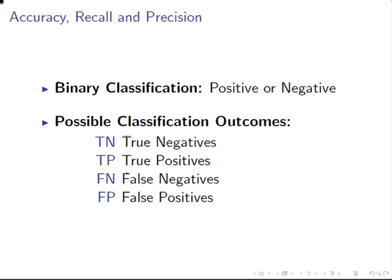We could have cases that are actually positive but predicted to be negative, or actually negative and predicted to be positive. There are four possible outcomes. True negative: actually negative and predicted to be negative. True positive: actually positive and predicted to be positive. False negative: actually positive but predicted to be negative. And false positive: actually negative but predicted to be positive.